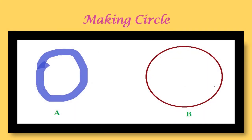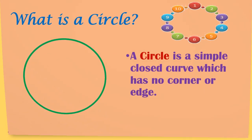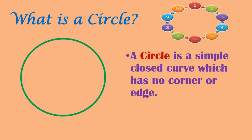Look at pictures A and B. Which picture do you think is a perfect circle? Yes, B is a perfect circle. A circle is a simple closed curve which has no corner or edge.